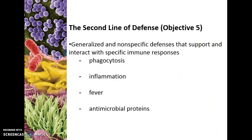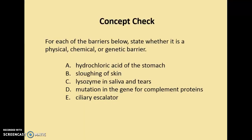The second line of defense has four major features and they are generalized — nonspecific to a degree — and they support and interact with the specific components of the immune response. These four major activities are phagocytosis, inflammation, fever, and antimicrobial proteins. That is just a big overview.